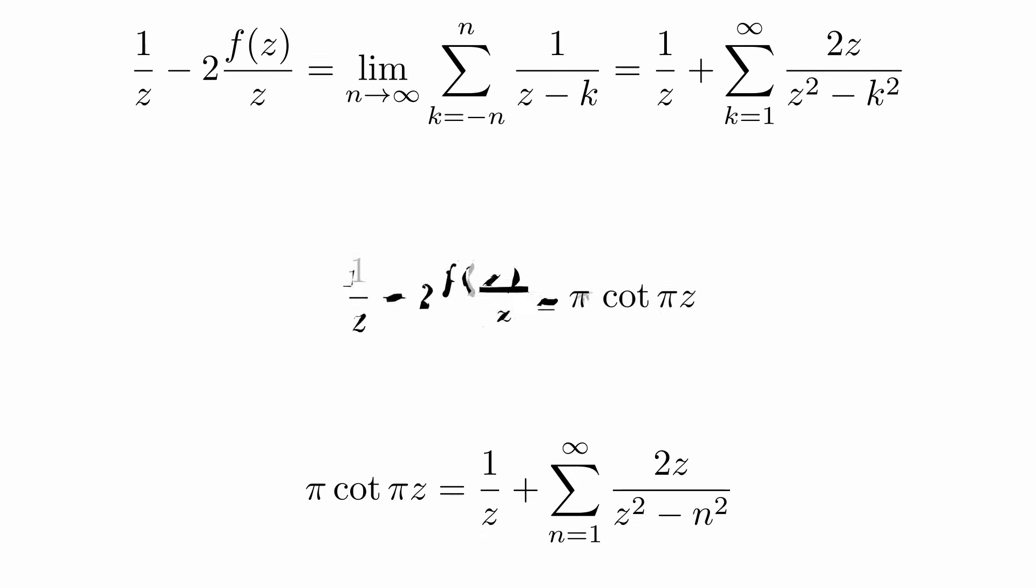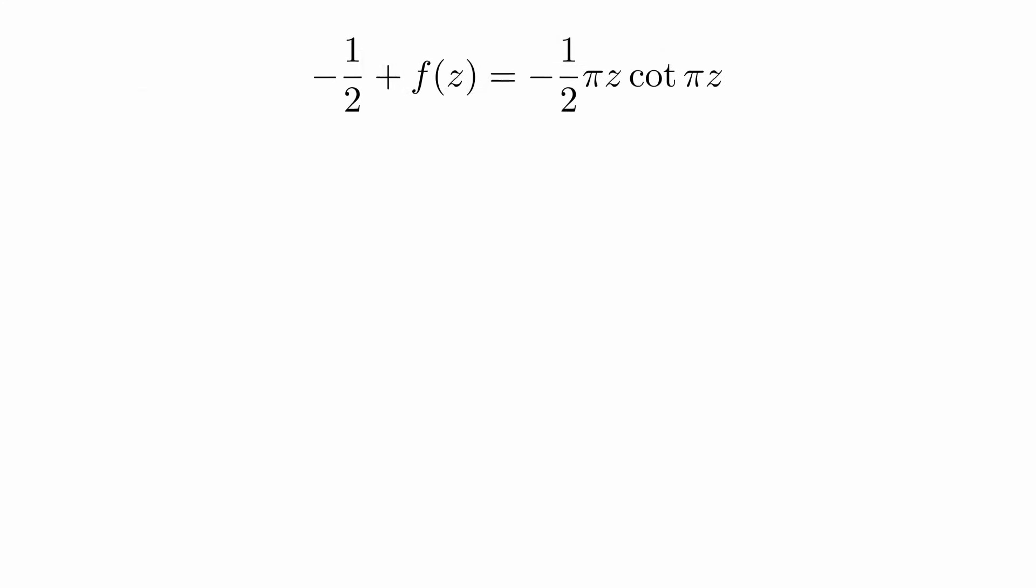So after some rearranging, we get that minus one half plus the generating function is equal to a multiple of the cotangent. We can actually make sense of the minus one half.